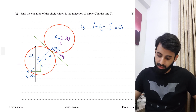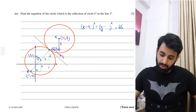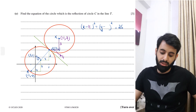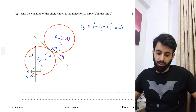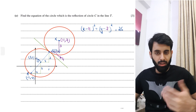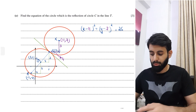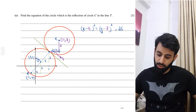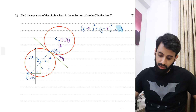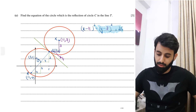So the equation of the reflected circle is: (x minus 11) squared plus (y minus 7) squared equals 25. That's the final answer.